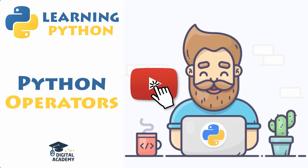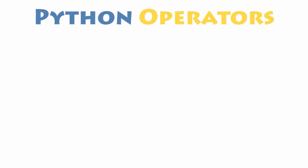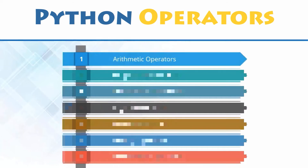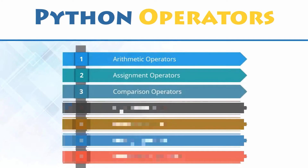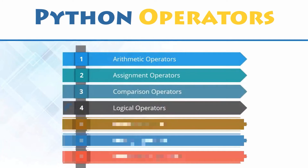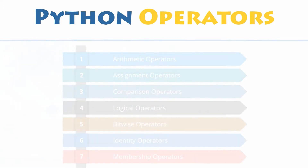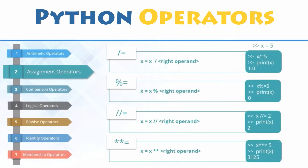Now let's play this video. Types of operators. Depending upon the type of operations you want to perform, there are seven types of operators in Python: arithmetic operators, assignment operators, comparison operators, logical operators, bitwise operators, identity operators, and membership operators.